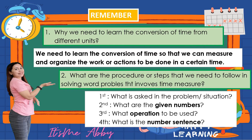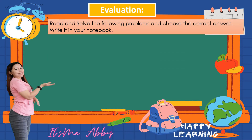The steps we need to follow in solving word problems are: first, know what is asked in the problem or situation; second, identify the given numbers; third, determine the operations to be used; and fourth, write the number sentence of the problem. Those are very important to know.